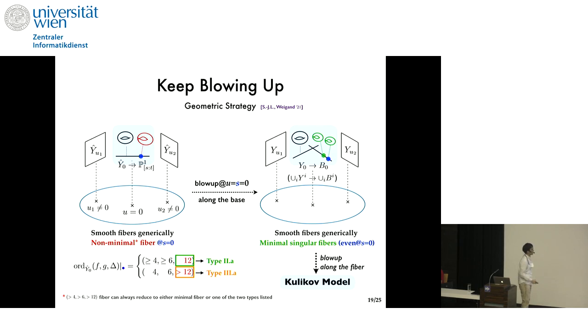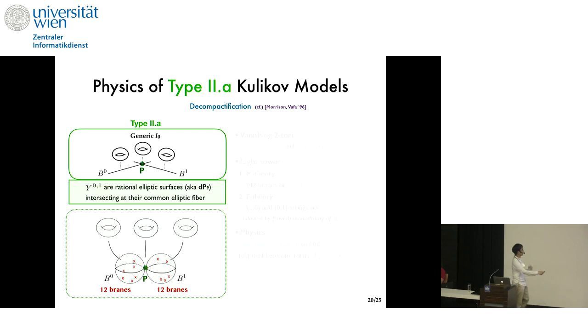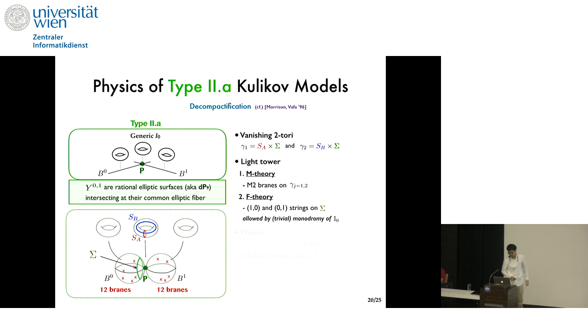Okay let me briefly talk about type 2a models first. The geometry can always be put into this form you have a pair of rational elliptic surfaces or dP9s you have generic I0 fibers and at the intersection point you have again a smooth fiber so these two surfaces indeed intersect at the common elliptic fiber over P and this is a closer look where the red crosses indicate the seven brane loci and as a type 2 limit you must expect two vanishing tori and then indeed you can spot them they are essentially the two one cycles SN and SB fibered over this vanishing one cycle in the base sigma around the point P. Now in M theory M2 branes wrapping this vanishing two tori lead to a pair of light BPS towers and in F-theory the towers arise from the 1,0 and 0,1 string around the base one cycle sigma and they are both allowed by the trivial monodromy at P.